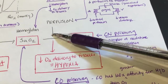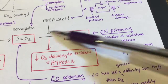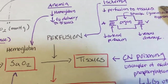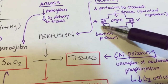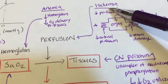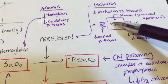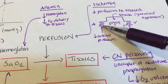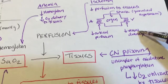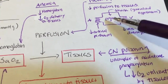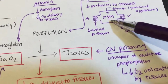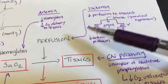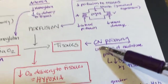Moving on to perfusion — the process of getting oxygen into the tissues — the key concept here is ischemia, which is decreased perfusion to the tissues. There are three main causes: decreased arterial perfusion (blocking inflow to the organ), decreased venous drainage (blood backs up within the organ), and shock (generalized hypotension that decreases perfusion throughout). All three lead to ischemia, meaning decreased oxygen delivery to the tissues.